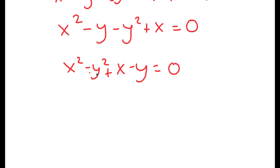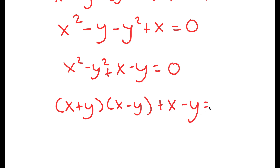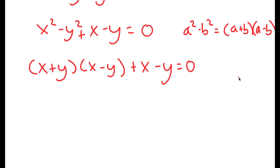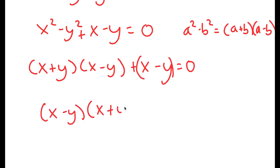Now, x squared minus y squared I can rewrite as (x plus y)(x minus y), because a squared minus b squared equals (a plus b)(a minus b). So if I factor out (x minus y), I get (x minus y)(x plus y plus 1) is equal to 0.